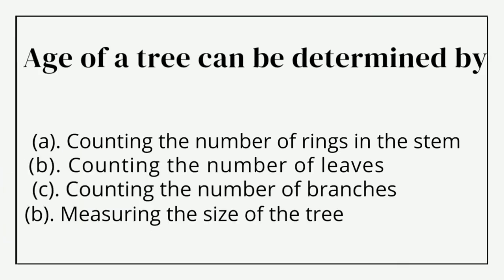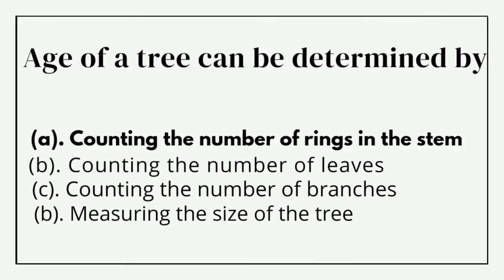My first MCQ is: the age of a tree can be determined by — option A: counting the number of rings in the stem, option B: counting the number of leaves, option C: counting the number of branches, option D: varying the size of the tree. The correct answer is option A: counting the number of rings in the stem.